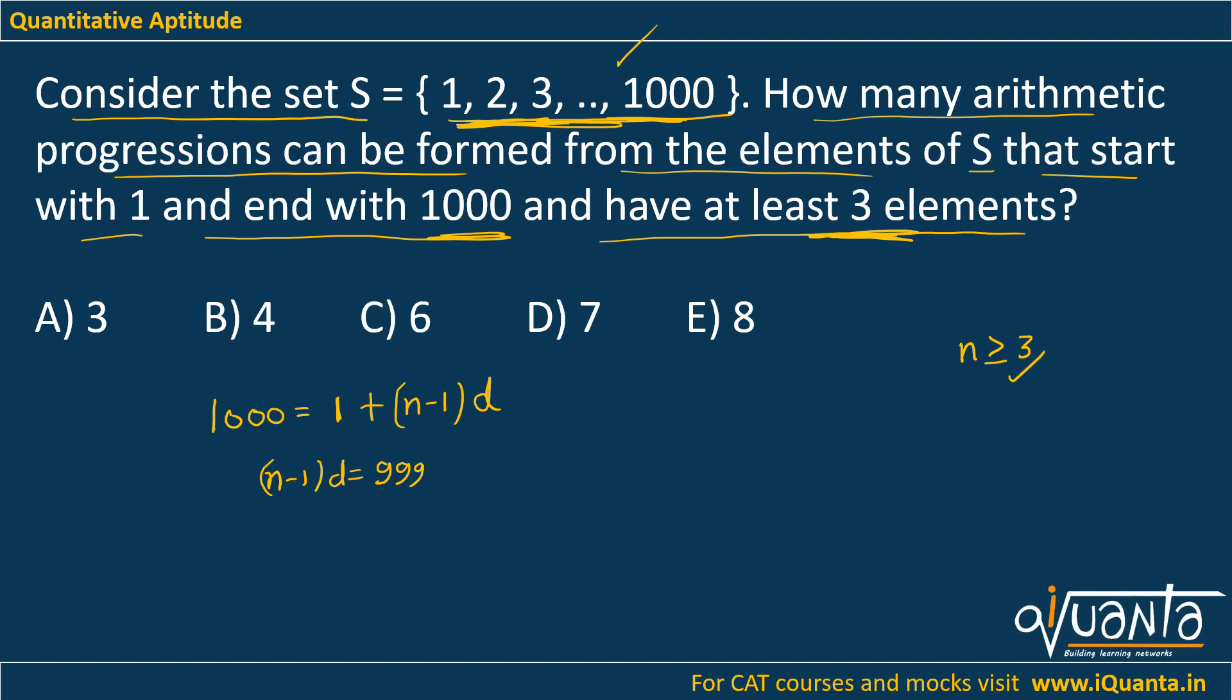So what we can see here is two integers are being multiplied: (N minus 1) and D. So what we can do here is find out the factors of 999, then using those factor pairs we will decide what can be the possible values for N and D. N should not be less than 3.